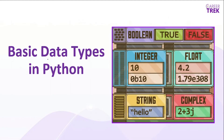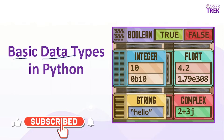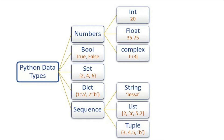In this video we will be discussing the basic data types in Python. A data type refers to the classification or type of data stored inside a data item. Python has several data types: for numeric data we have integer, float, and complex data types for complex numbers.